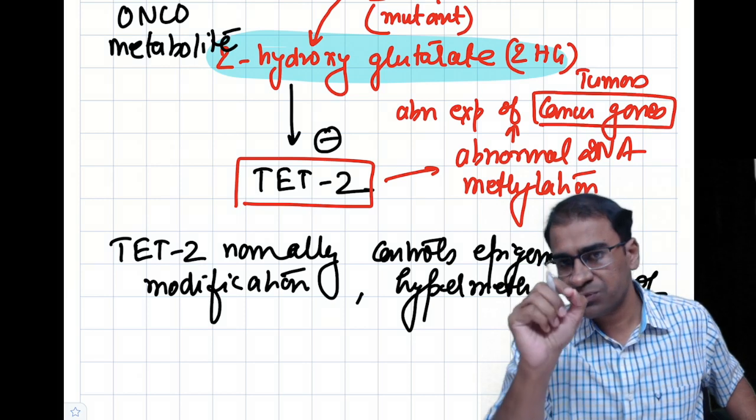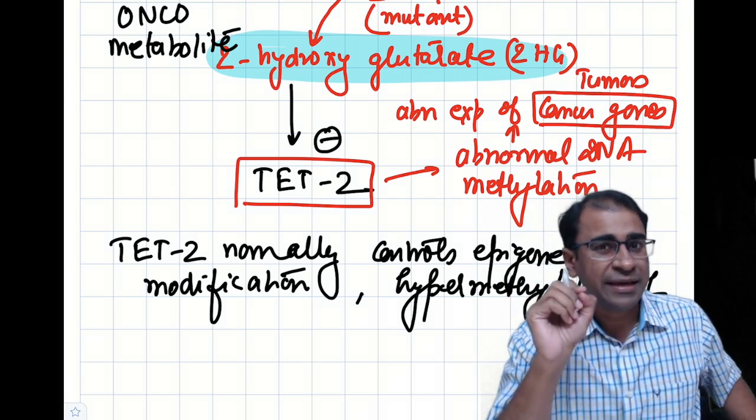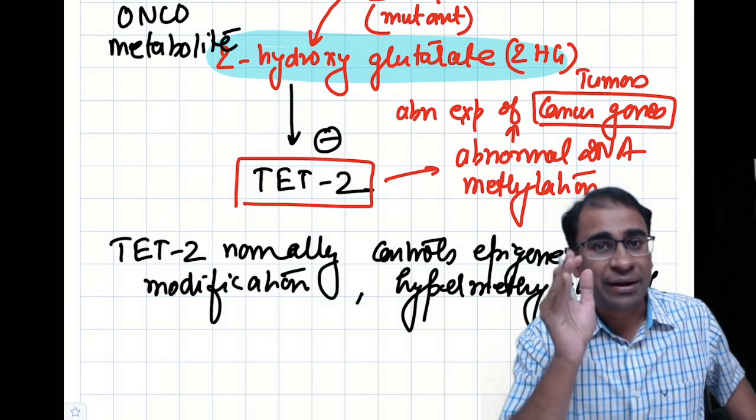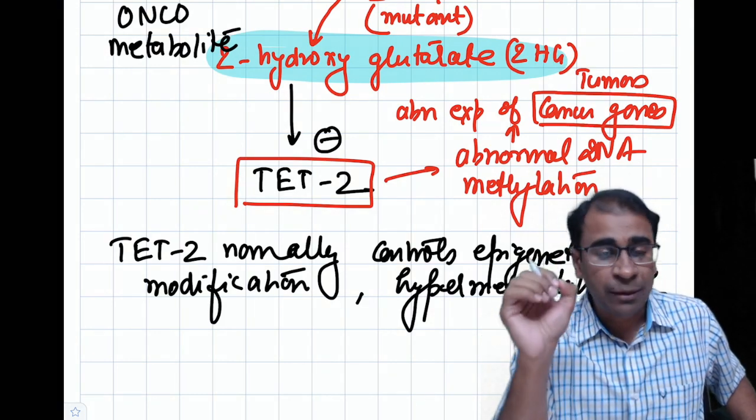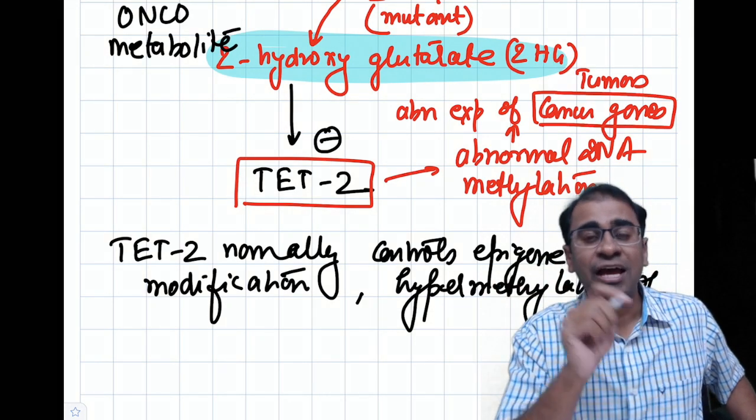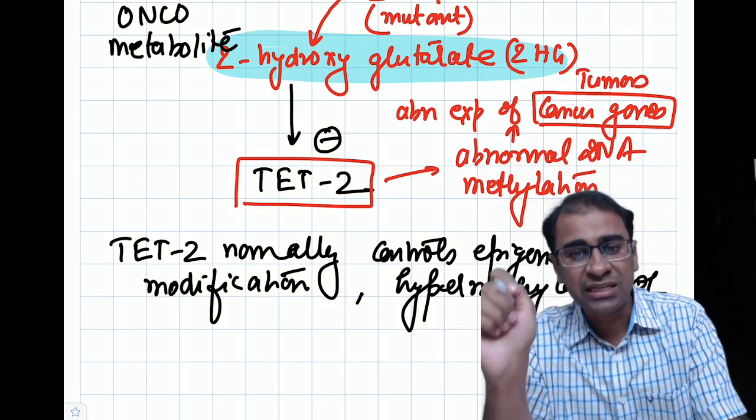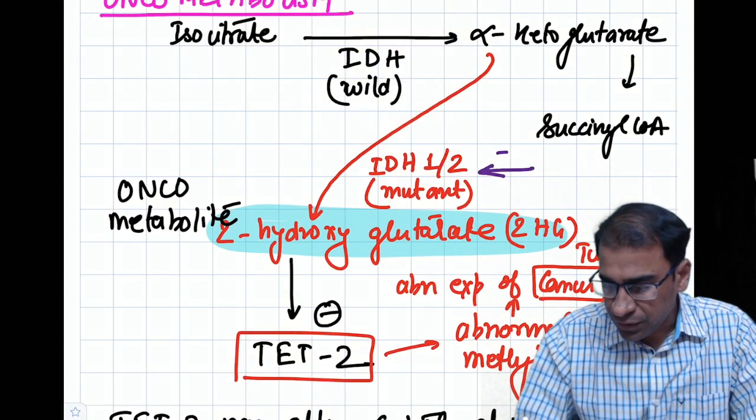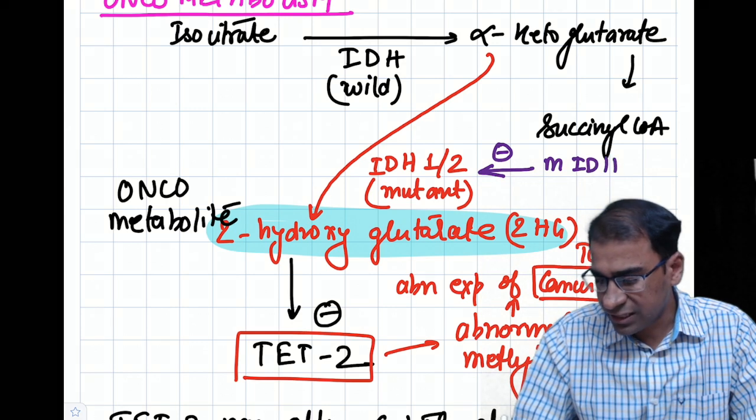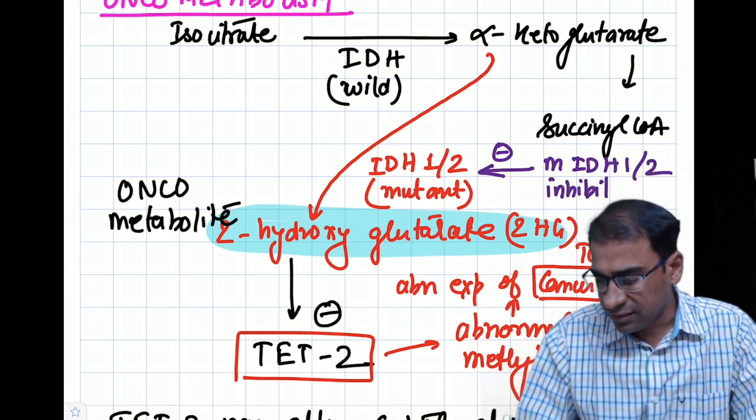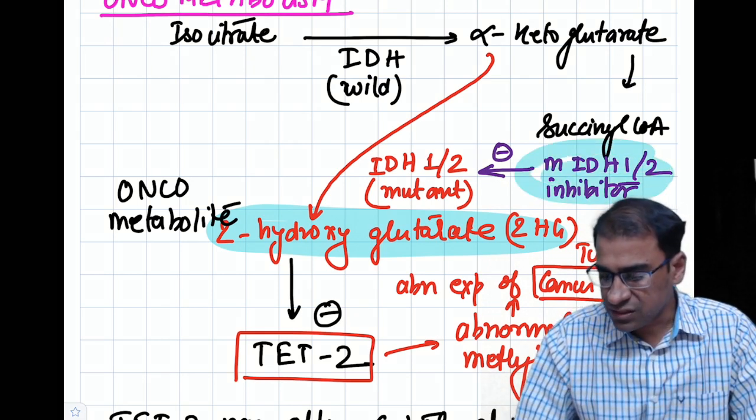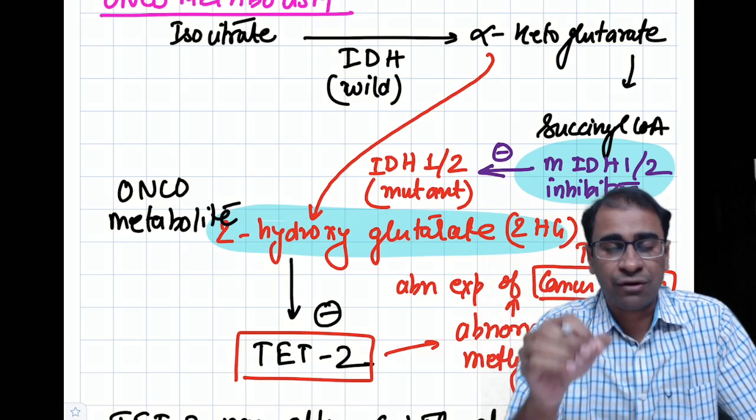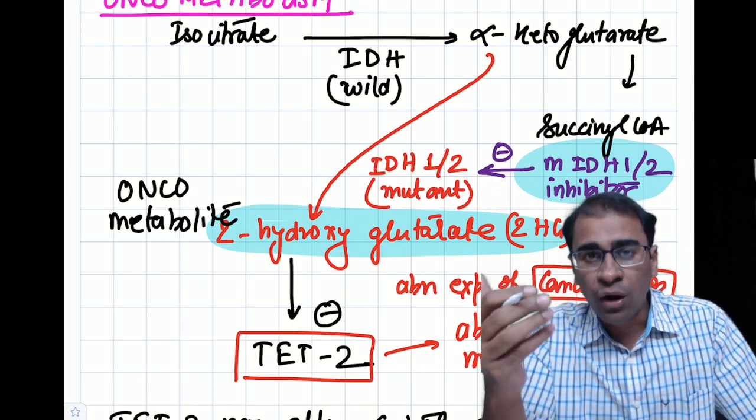You may not be able to inhibit the wild type of IDH because drugs are not available against it. But yes, you may be able to inhibit the mutated form of IDH. There are some drugs being developed which can inhibit the mutant IDH. There are mutant IDH1 and IDH2 inhibitors. This recent discovery is a breakthrough mechanism of treating certain cancers which have IDH mutations.